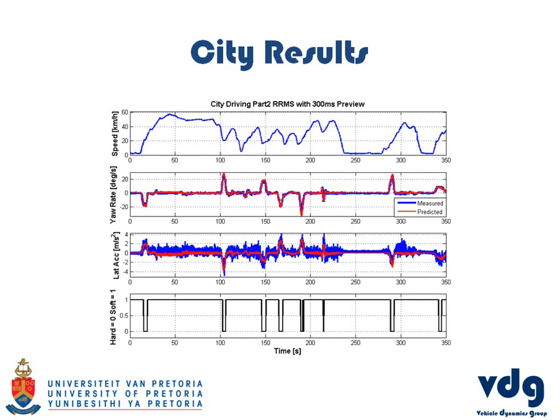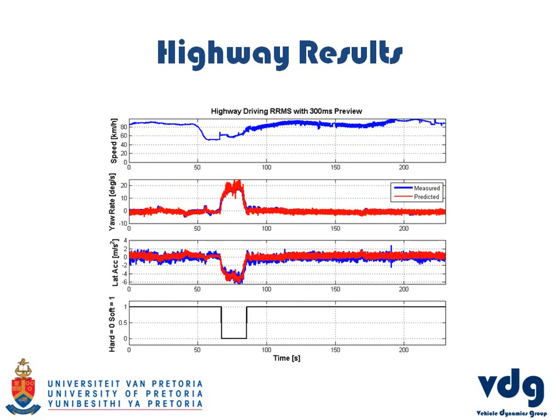We had to ensure the suspension doesn't switch unnecessarily. We had some problems in city conditions — the raw, unfiltered data was used to avoid further delay, but below about 10 kilometers per hour there was a lot of noise, causing the suspension to switch even while standing still at a traffic light. We added a speed limit: if the vehicle is traveling below 10 kilometers per hour, no changes are made to the suspension. In city and highway conditions, there is no spurious switching of the suspension.